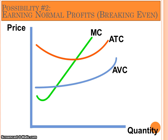Possibility number two for a perfectly competitive firm in the short run, or condition number two, is to earn normal or zero economic profits, which is the same thing as breaking even. What this means is that all the firm's implicit costs and explicit costs of production are covered. So this break-even possibility is a perfectly acceptable place to be and to remain indefinitely, because you're covering all your explicit and implicit costs.